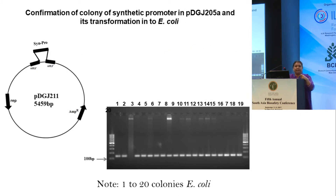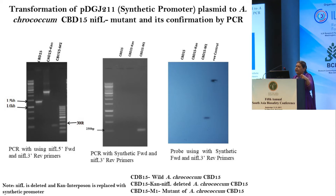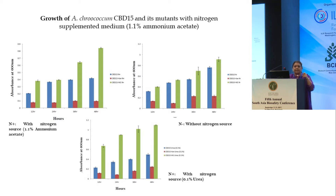The next step was designing a synthetic promoter based on the sigma 70 promoter, which is a constitutive promoter. The native promoter of Azotobacter chroococcum is sigma 54. Another construct was developed along the same lines: the NIF-L gene with the synthetic promoter inserted. This was checked in E. coli first, then used for transformation of Azotobacter. Again, after 18 subcultures, we get a single band, confirmed by Southern hybridization.